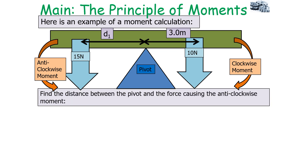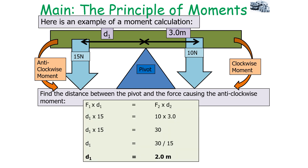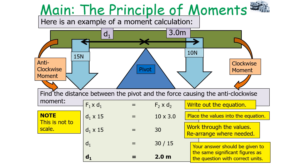Another example: find the distance between the pivot and the force causing the anti-clockwise moment for a balanced object. Again, F1 × d1 = F2 × d2 since anti-clockwise moment equals clockwise moment. Placing in values: d1 × 15 = 10 × 30, so d1 × 15 = 300... correcting: d1 × 15 = 30, so d1 = 30 ÷ 15 = 2 metres. Write out the equation, place in values, work through, rearrange where needed, and give your answer to the correct significant figures with correct units.